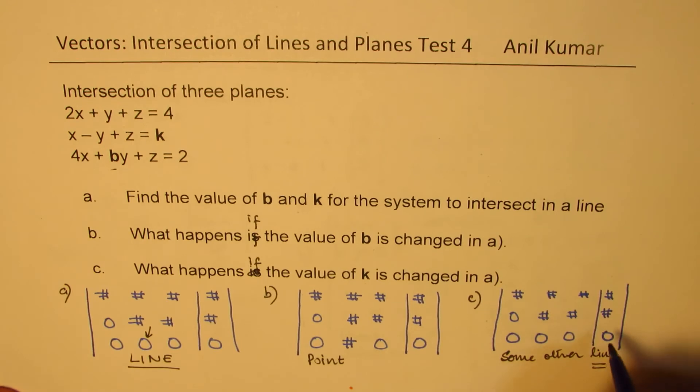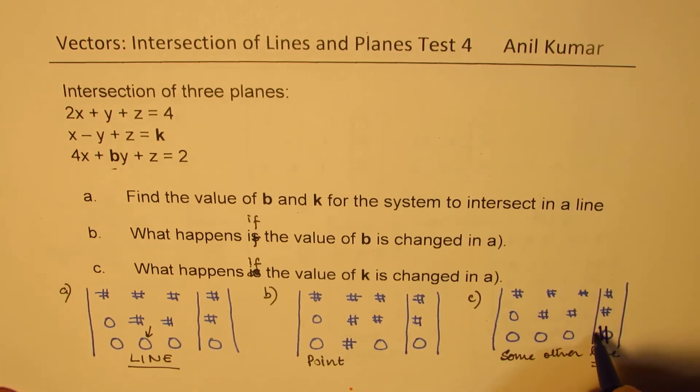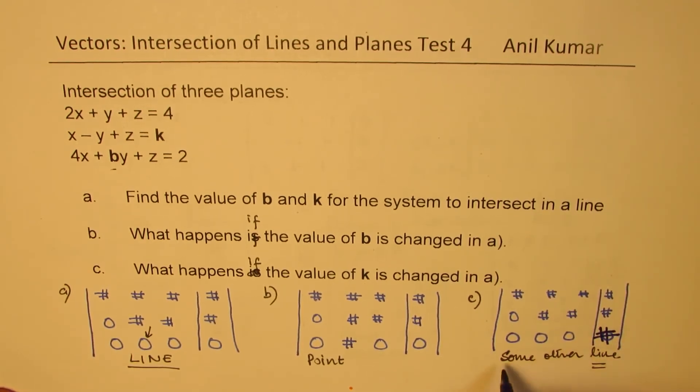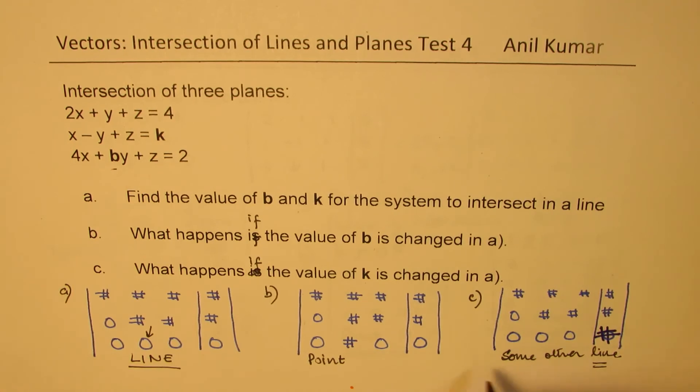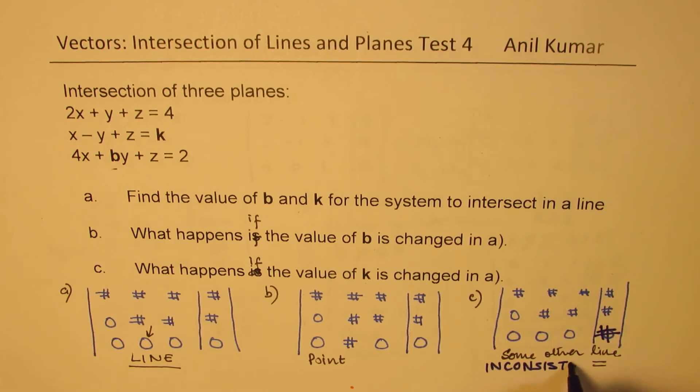So in this case, let me correct this. Since that will not be 0, it will be equal to some other point. So here we will get inconsistent system. And it will look like a triangular prism.